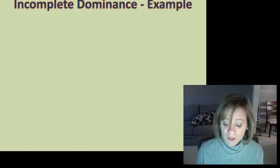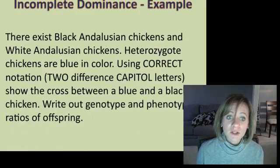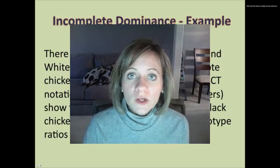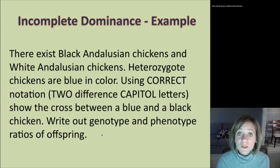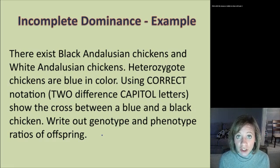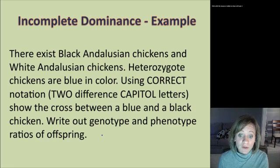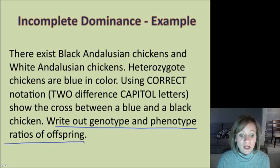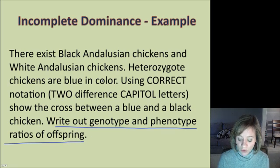I'm going to have you do this next one on your own in your notes. Remember that the heterozygote has an intermediate phenotype and its genotype is going to have those two different alleles. At the end, write out the genotype and the phenotype ratios of the offspring of this cross.